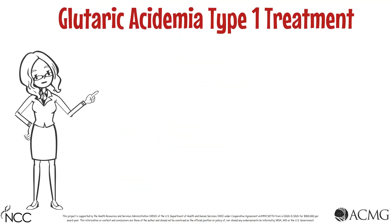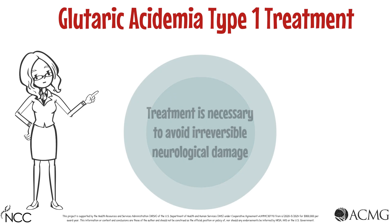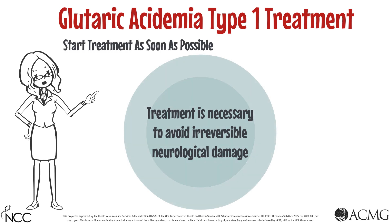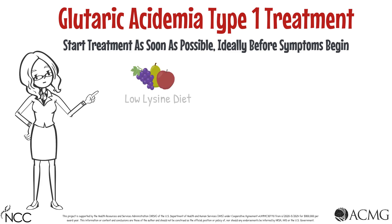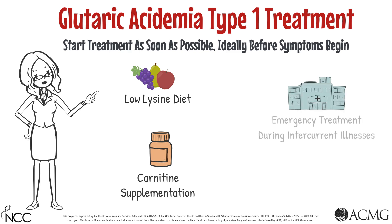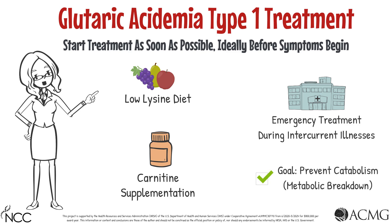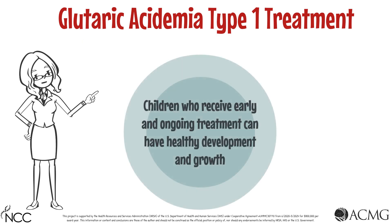Treatment for Glutaric Acidemia Type 1 is necessary to avoid irreversible neurological damage. It is important to start treatment as soon as possible, ideally before symptoms begin. Treatment includes a diet low in lysine, carnitine supplementation, and emergency treatment during intercurrent illnesses with the goal of preventing catabolism or metabolic breakdown. Children who receive early and ongoing treatment can have healthy development and growth.